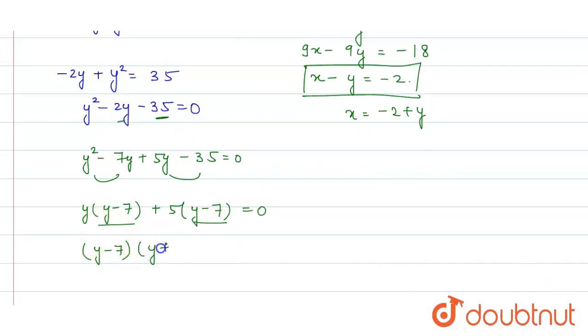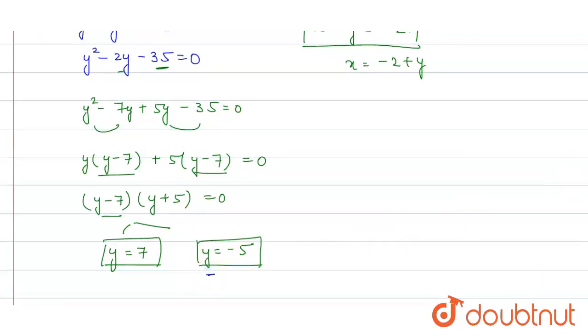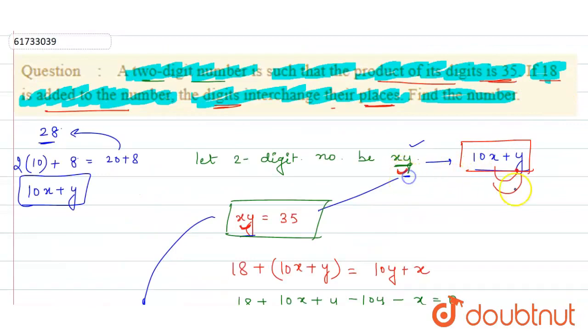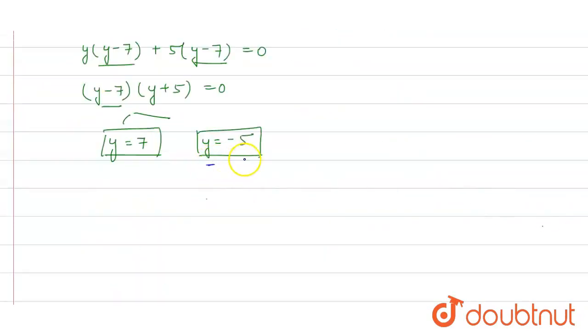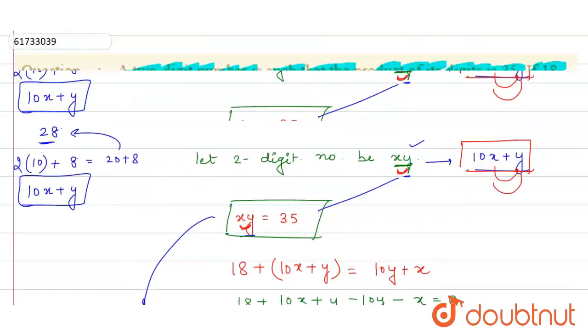So there will be two values. When y minus 7 equal to 0, y equal to 7. And when y plus 5 equal to 0, y is equal to minus 5. But here, x and y are digits of a number, and digits are never negative. So clearly y is equal to 7. And if y is equal to 7, then x is equal to y minus 2, that is 7 minus 2, that is 5.